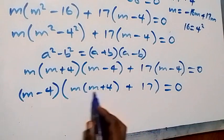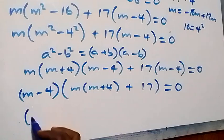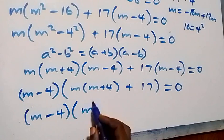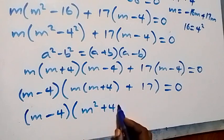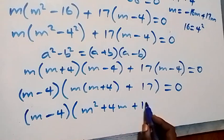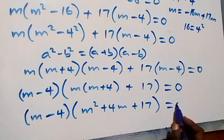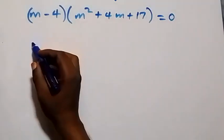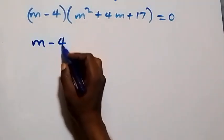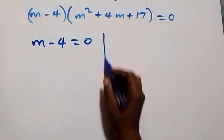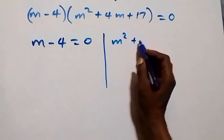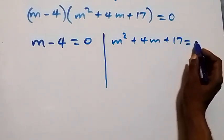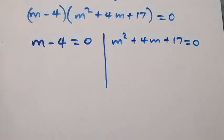Expanding the bracket, m(m + 4) gives m² + 4m, so we have (m − 4)(m² + 4m + 17) = 0. From here we have two cases: m − 4 = 0, or m² + 4m + 17 = 0.